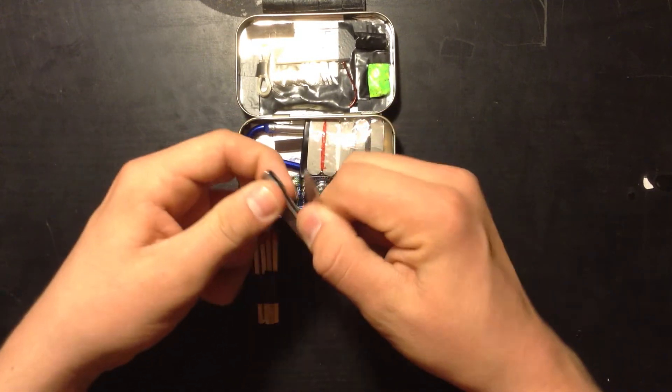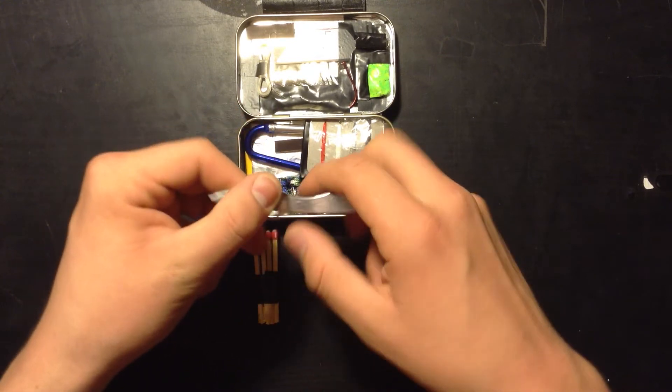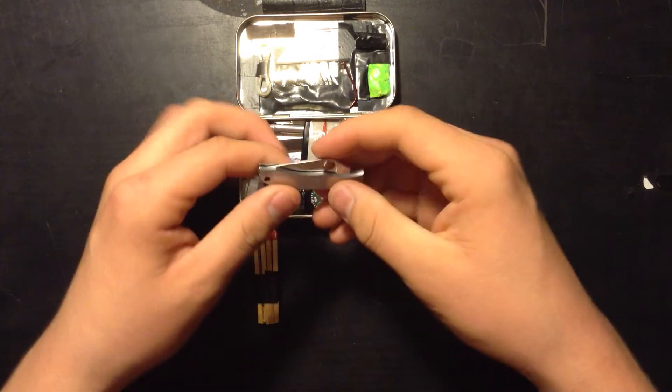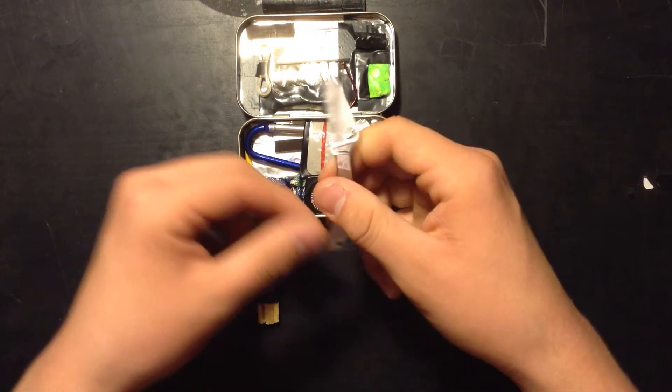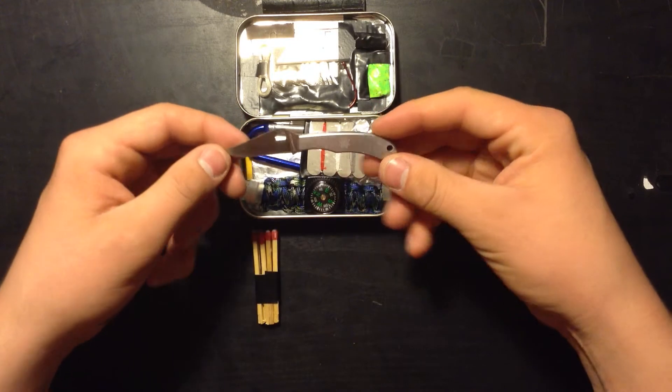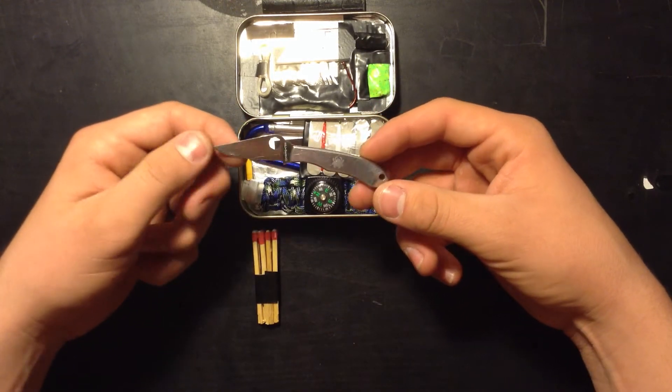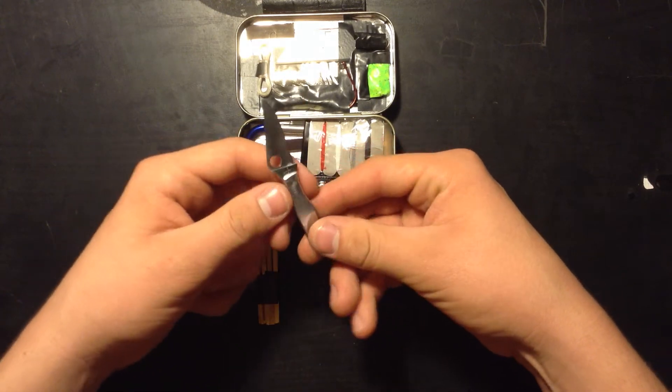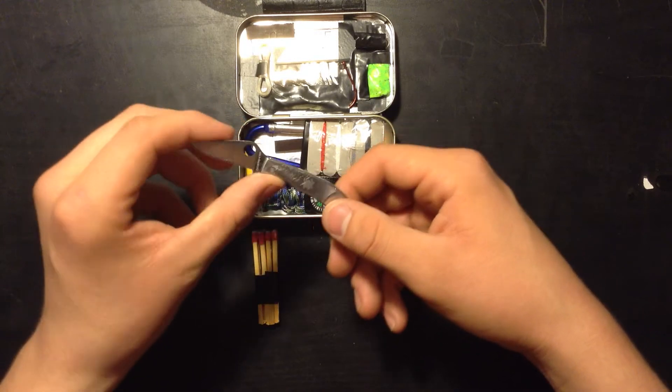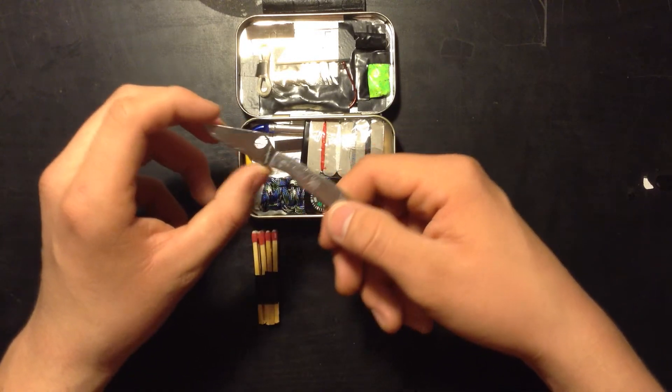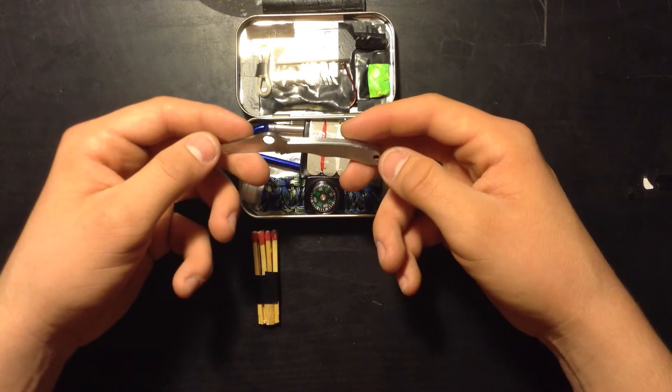Next I got a Spyderco Honeybee. This is the middle one. There's a bug, there's the honeybee, and then you got the grasshopper. I really like this knife. I had it in my back pocket for a long time, so much to the point where I accidentally brought it to school a couple times, which is pretty bad. I don't recommend bringing knives to school. It was an accident.